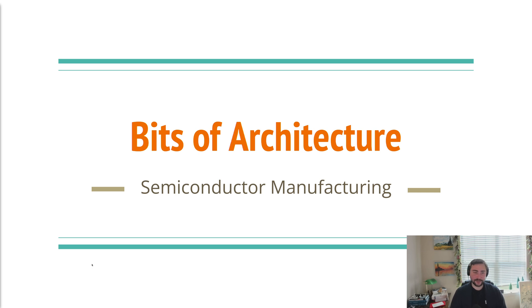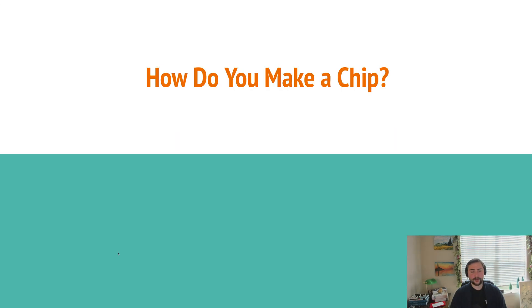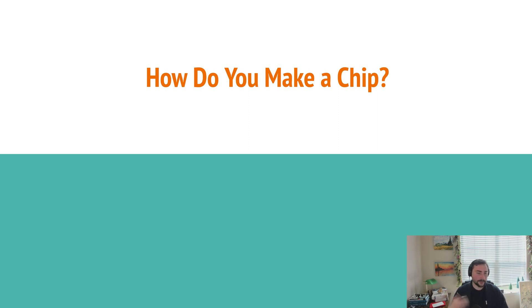Hey everyone, I'm Nick, and this is Bits of Architecture. In this episode of the series, we're going to be talking about semiconductor manufacturing. Up until this point, we've been primarily concerned with the higher levels of abstraction — things like software, system software, and even architecture. But as good computer architects, we want to have some context about the lower levels of abstraction as well, like semiconductor manufacturing. At the end of the day, we want to be able to answer the question, at a high level, of how do we actually make a chip?